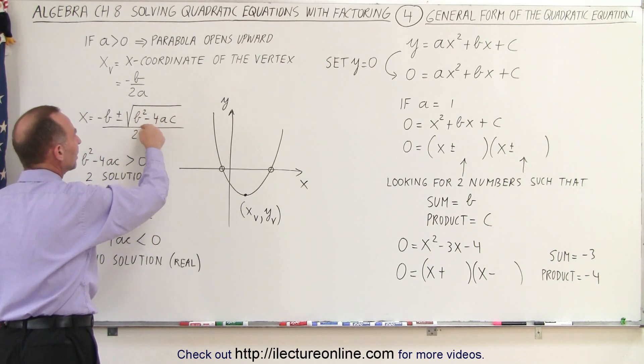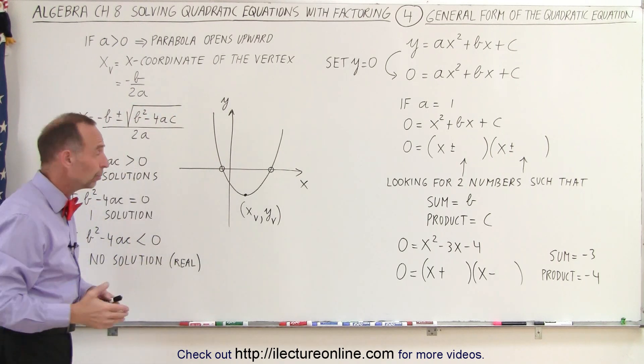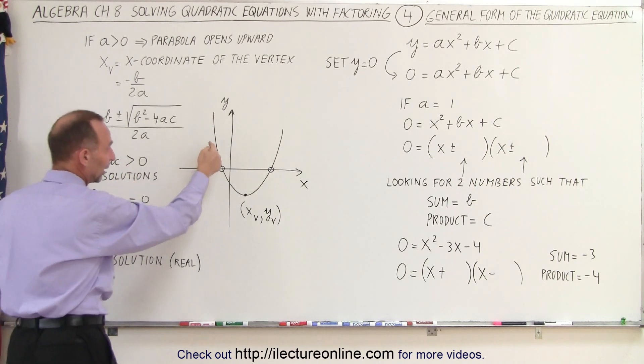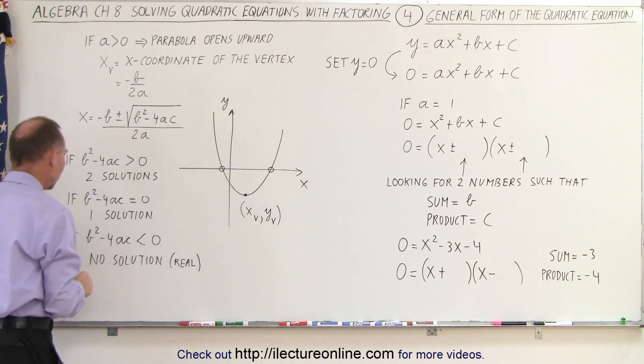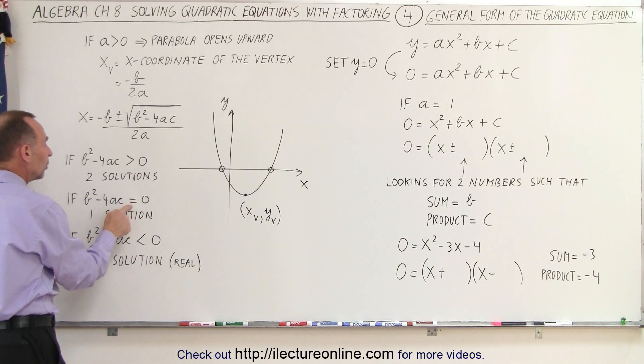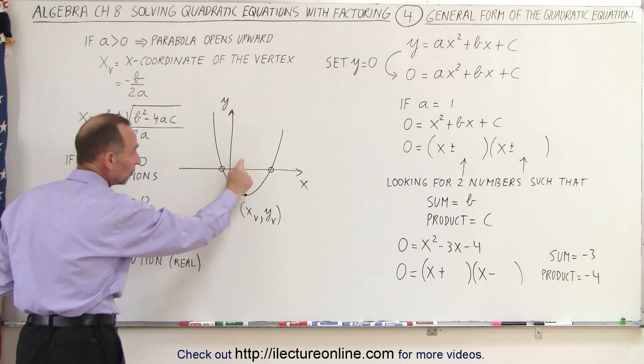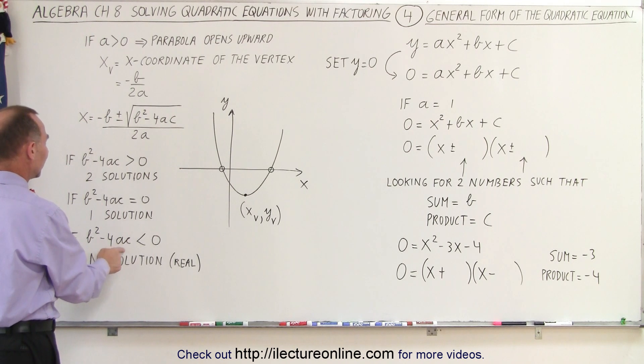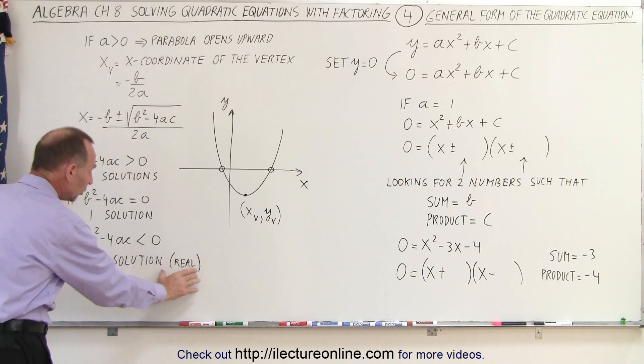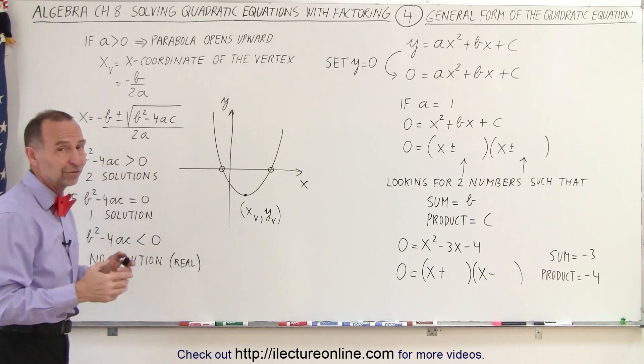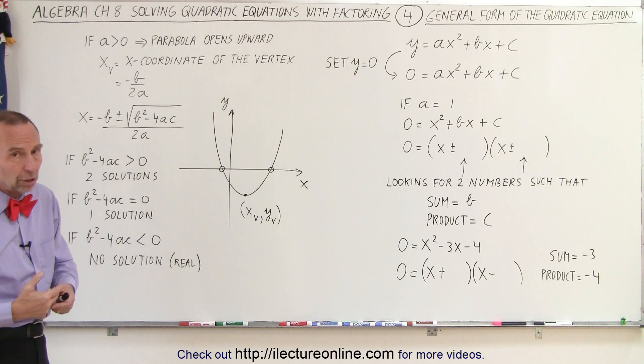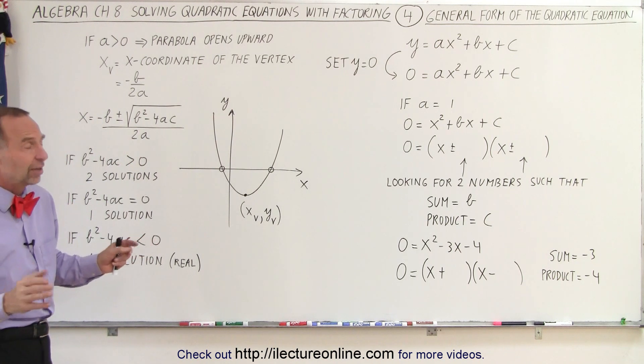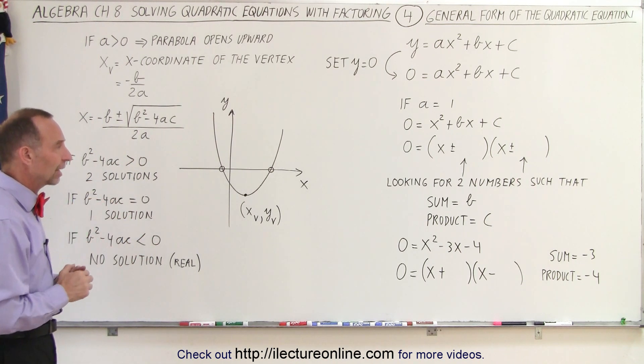If we then take a look at the quantity underneath the radical, sometimes called the determinant, then we can see that if that quantity is greater than 0, there will be two solutions, two places where the function crosses the x-axis. If b squared minus 4ac is equal to 0, then there's only one solution, only one point where the function actually touches the x-axis. And then if b squared minus 4ac is less than 0, then there's no real solution, because of course we can't have a negative number inside the radical, because that will give us what we call an imaginary number. Then there will be imaginary solutions, which means that the function does not cross the x-axis. There's no places where the function touches the x-axis.